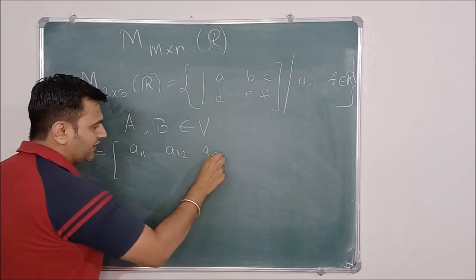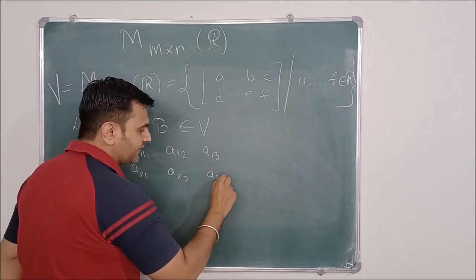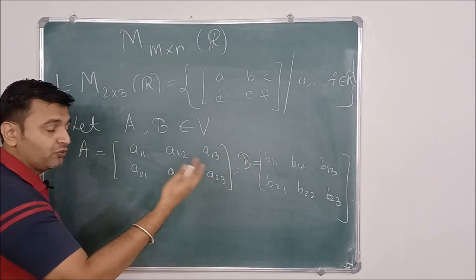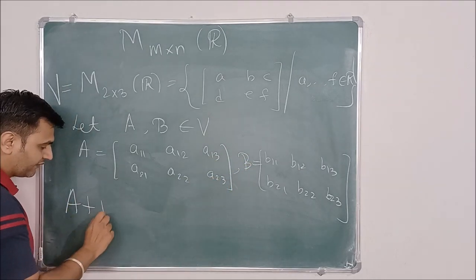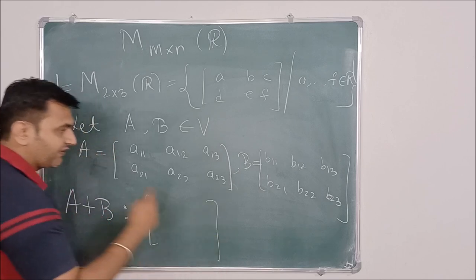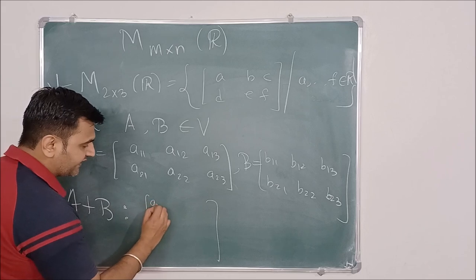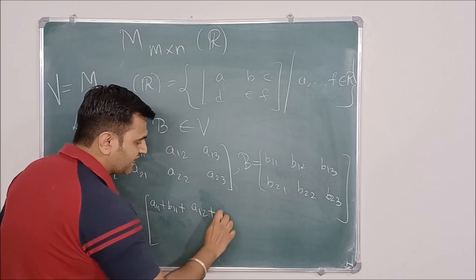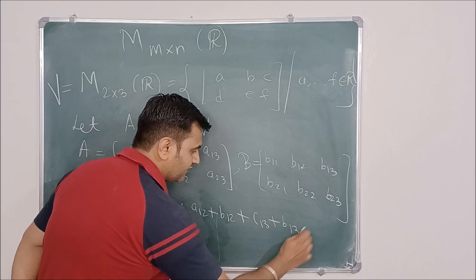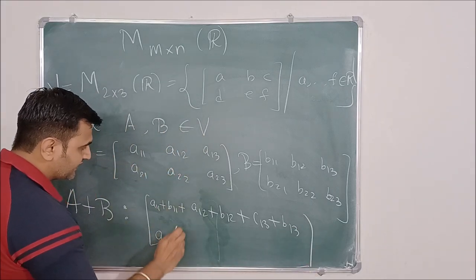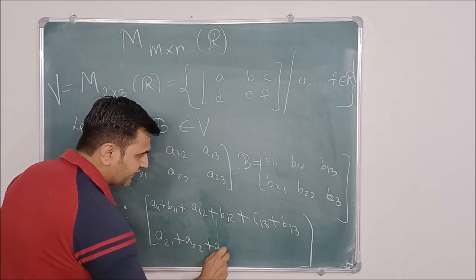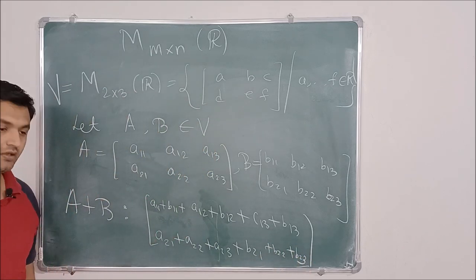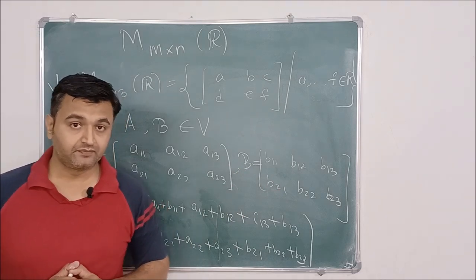Let matrix A have entries A11, A12, A13 and A21, A22, A23. Similarly matrix B has entries B11, B12, B13, B21, B22, B23. I'm defining the addition of these two matrices by summing each entire row into a single entry — so the result has first entry A11+B11+A12+B12+A13+B13, and second entry A21+A22+A23+B21+B22+B23.